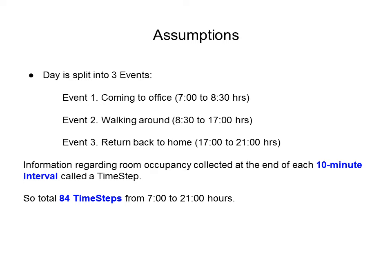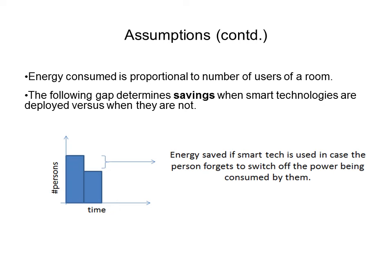Information regarding the occupancy of each person at each time step is collected at the end of a 10-minute interval, called a time step. There are a total of 84 time steps from 7 a.m. to 9 p.m. Energy consumed is proportional to the number of users in a room, and the savings when smart technology is deployed versus when it is not is determined by the gap — the number of persons leaving a room and not switching off their device.